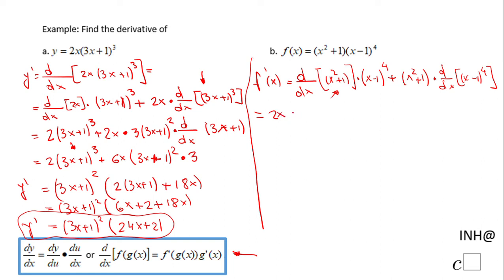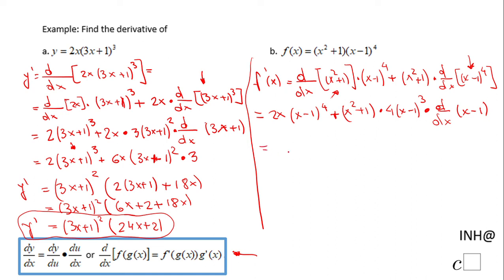The first part gives 2x times (x − 1)⁴. For the derivative of (x − 1)⁴, I use the power rule first: 4 times (x − 1)³, then by the chain rule multiply by the derivative of (x − 1) with respect to x, which is just 1. So we have 2x(x − 1)⁴ plus 4(x² + 1)(x − 1)³. Now we can factor out (x − 1)³ from both terms.